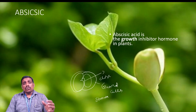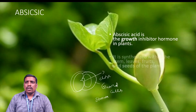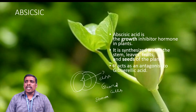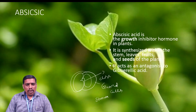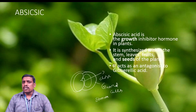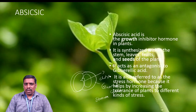During the final stage, at the end of plant growth, the inhibition of plant growth occurs by abscisic acid. It is synthesized in the stem and also leaves, fruits, and seeds of the plant. So all parts of the plant, except the flower, generally produce abscisic acid. Abscisic acid acts as an antagonist to gibberellic acid, which means it acts against the properties of gibberellic acid. That is why it is called antagonistic.